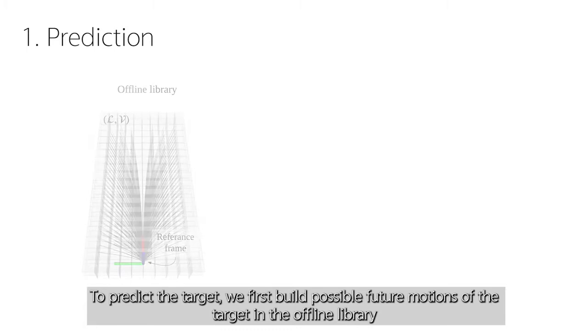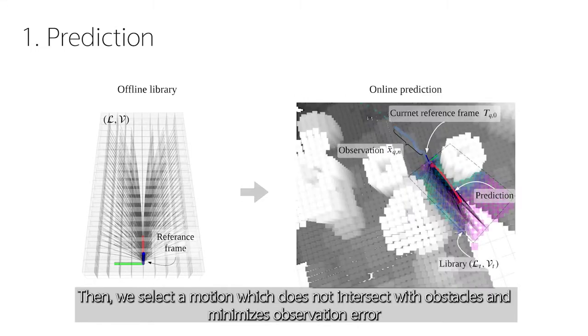To predict the target, we first build possible future motions of the target in the offline library. Then, we select a motion which does not intersect with obstacles and minimizes observation error.